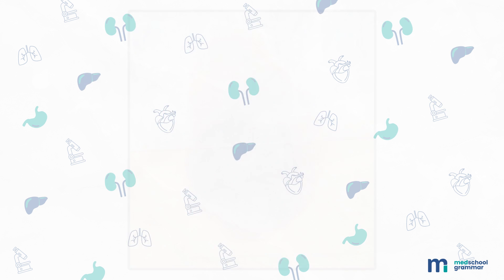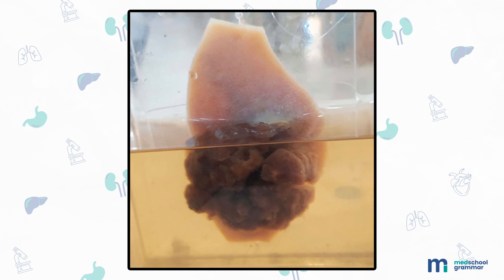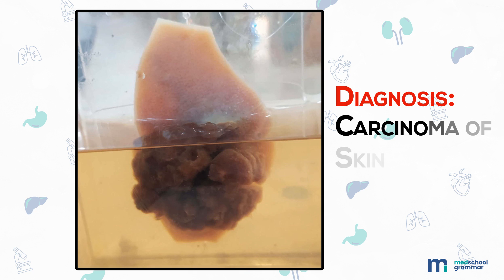Next we have a specimen of skin flap with subcutaneous tissue measuring 9 by 6 centimeters. The skin shows presence of a brownish-black mass 5 centimeters in diameter with slightly nodular surface and irregular margins. The surrounding skin and subcutaneous tissue are unremarkable. Diagnosis: this is a carcinoma of skin.